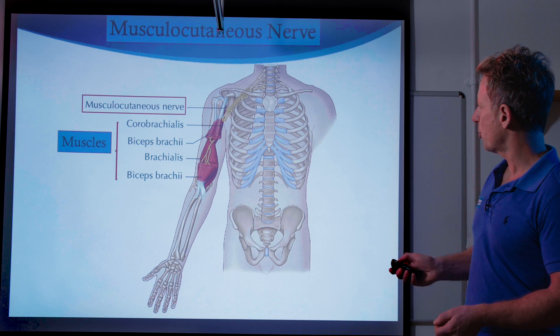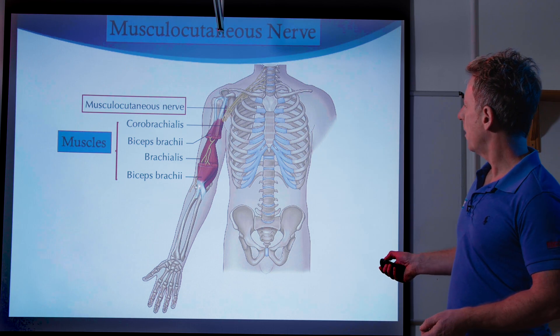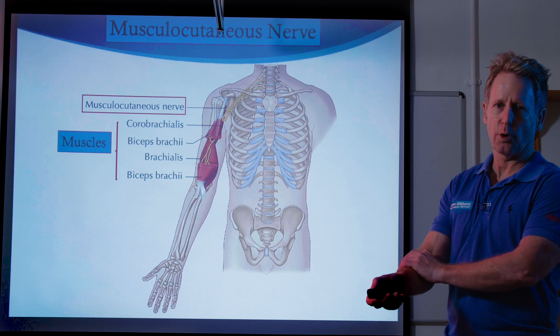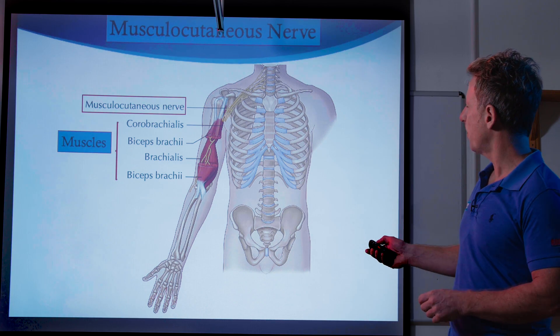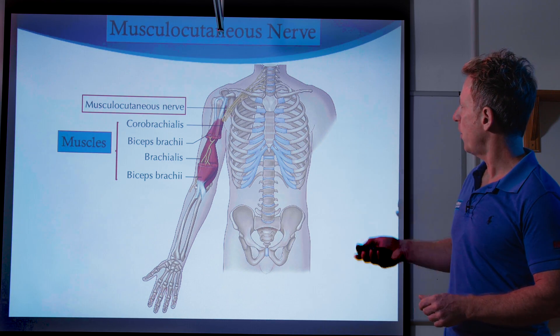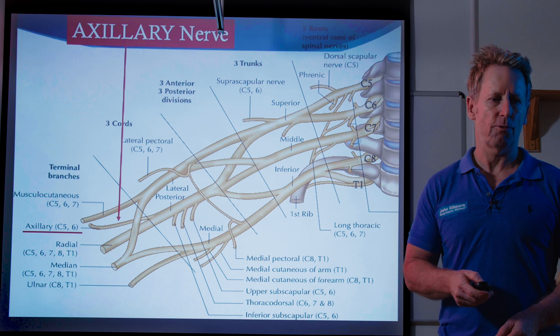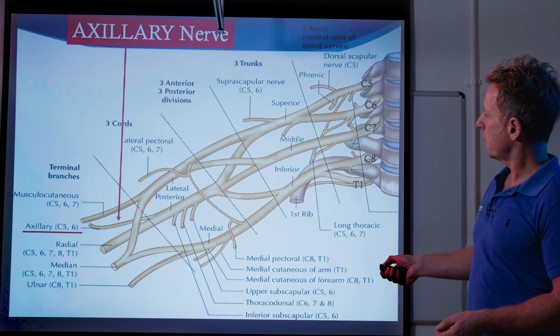The sensory component of the musculocutaneous nerve, which is not shown on the slide, will be the lateral forearm — that'll be the sensory compartment. So that's the M. Let's have a look at the axillary nerve.